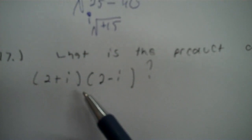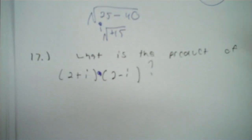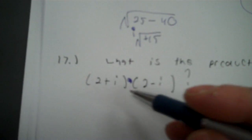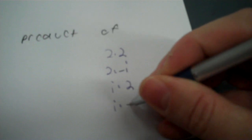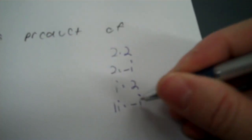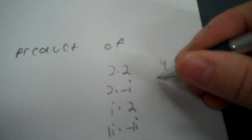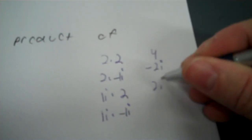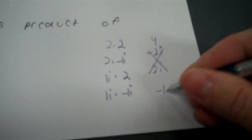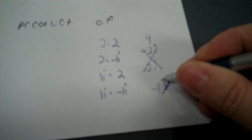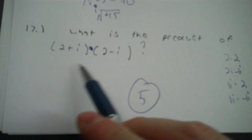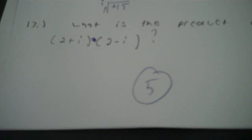What's the product of 2 plus i times 2 minus i? We've done this. 2 times 2 is 4. 2 times negative i is negative 2i. i times 2 is positive 2i — those cancel. Then i times negative i: put 1's in front — that's negative 1 times i squared, which is negative 1 times negative 1, equals 1. Combine 4 and 1 — it's 5. The product ends up being a constant.